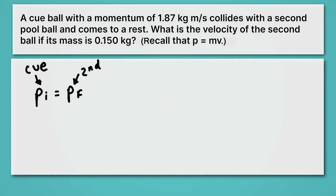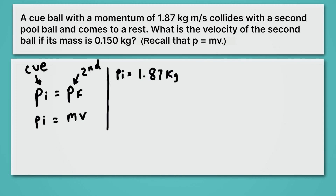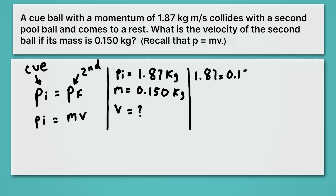Now we know the initial momentum, and what we want to find is the final velocity. Recall that momentum is equal to mass times velocity. So we can rewrite this as: momentum initial equals mass times velocity, where that mass is the mass of the second ball and that velocity is the velocity of the second ball. We know momentum initial is 1.87 kilograms·m/s, and we know that our mass is 0.150 kilograms. What we don't know is the velocity of that second ball. Plugging in what we know: 1.87 equals 0.15 times velocity.